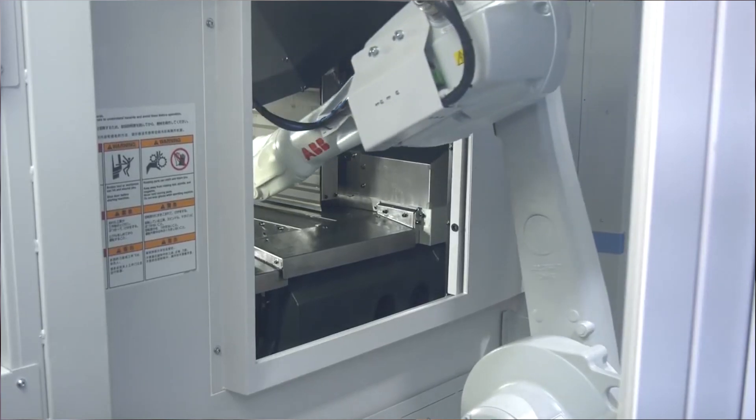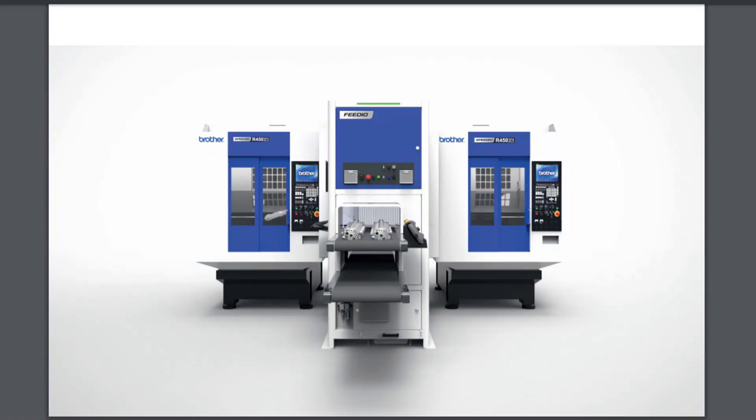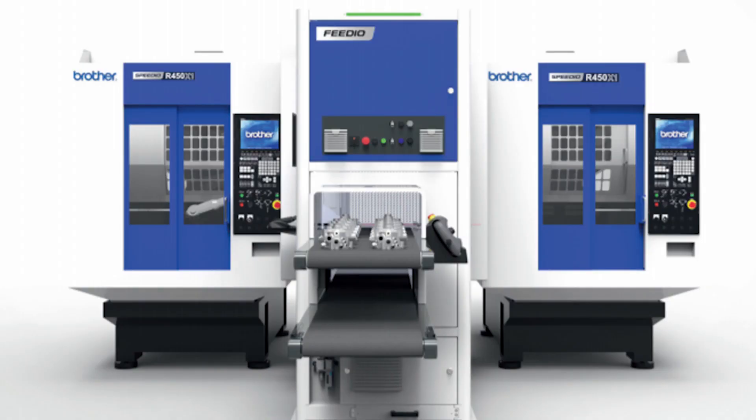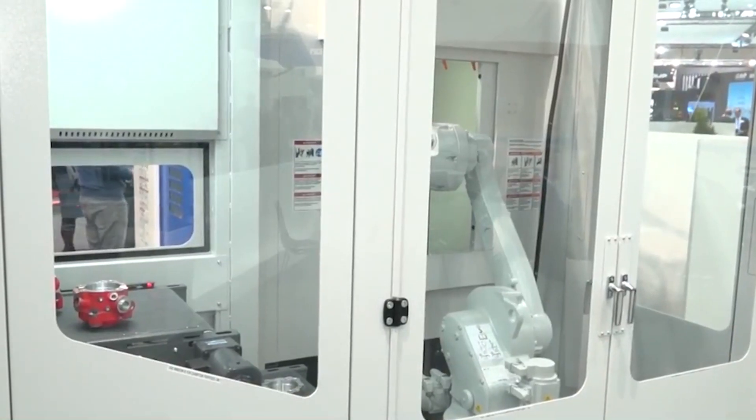And you'll see here that a Speedio unit can actually feed two machines. It can feed one to the left and one to the right. This could be OP10, OP20, or you could be doing completely different components on each machine.